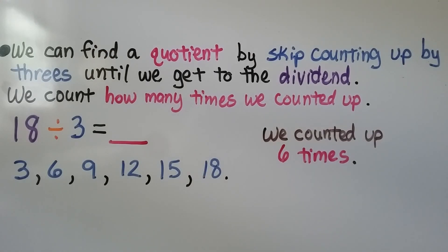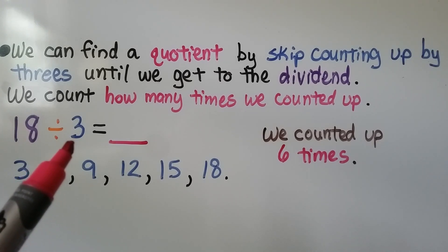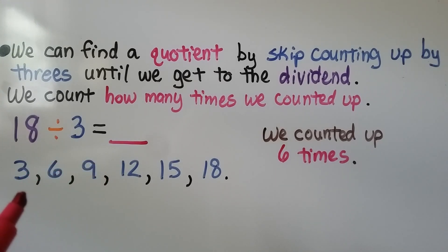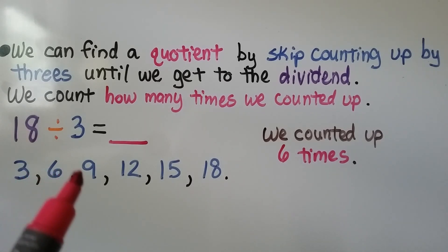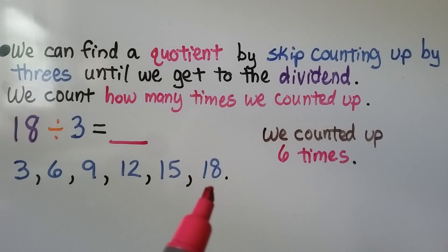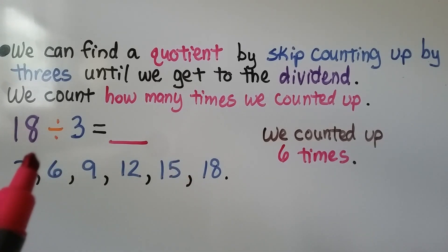We can find a quotient by skip counting up by 3's until we get to the dividend, then count how many times we counted up. We have 18 divided by 3. We count up skip counting by 3's: 3, 6, 9, 12, 15, until we get to 18, our dividend.